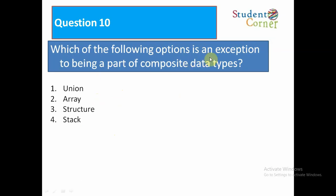Which of the following options is an exception to being a part of composite data types? Option 1: Union. Option 2: Array. Option 3: Structure. Option 4: Stack. The answer is Stack. Thank you.